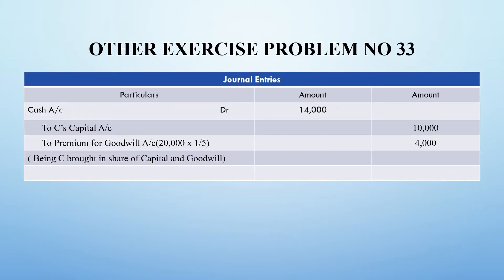The last entry is cash coming into the business in the form of capital and premium for goodwill. C brings in 10,000 as capital and his proportion of goodwill is 4,000 rupees - that is 1/5 of 20,000 equals 4,000. So C should bring a total of 14,000 rupees as cash.